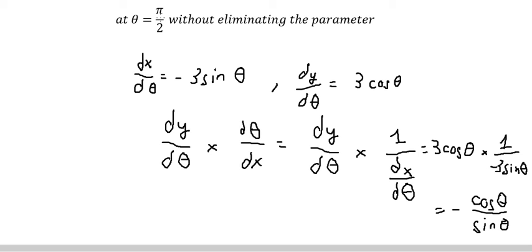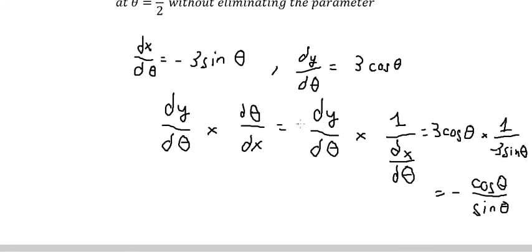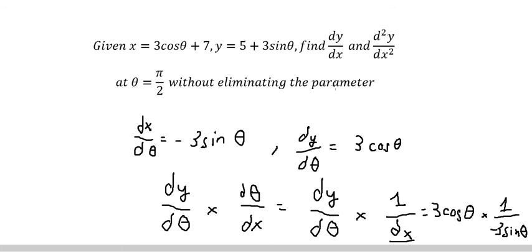So we put theta is equal to pi over 2 in here and here. You will get about 0 over 0, and this is the first answer.